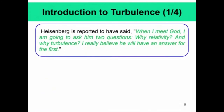Going back to turbulence — turbulence is a complex thing. Even Heisenberg, famous for the uncertainty principle, when asked about turbulence said: 'When I meet God, I am going to ask him two questions — why relativity and why turbulence? I really believe he will have an answer for the first, but there is no answer for turbulence.' Turbulence still is the most important unresolved problem in classical physics, and it continues to be so — yet it is very beautiful in terms of mathematics and physics.